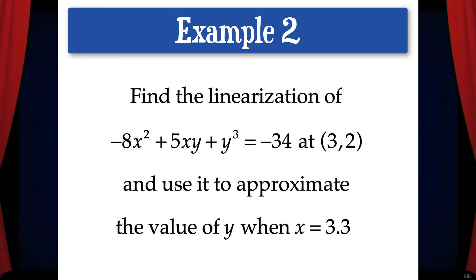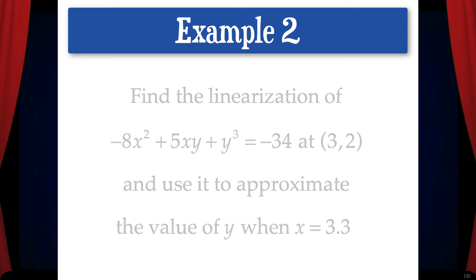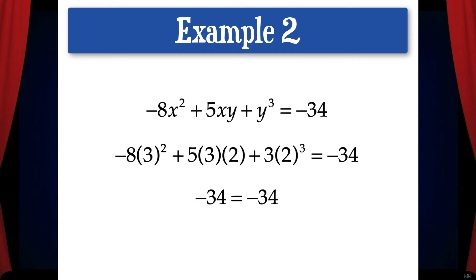Let's do one more example. Find the linearization of negative 8x squared plus 5xy plus y cubed equals negative 34 at the point (3,2), and use it to approximate the value of y when x equals 3.3. First, I just want to verify that the point (3,2) is actually on this curve.